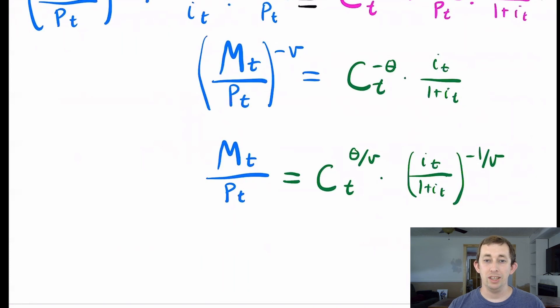Hopefully this gives you a little bit of an overview of a DSGE model and how to take an intratemporal first order condition. If it made sense or was helpful, make sure to like and subscribe, and we will see you next time for another case of econ struggles.